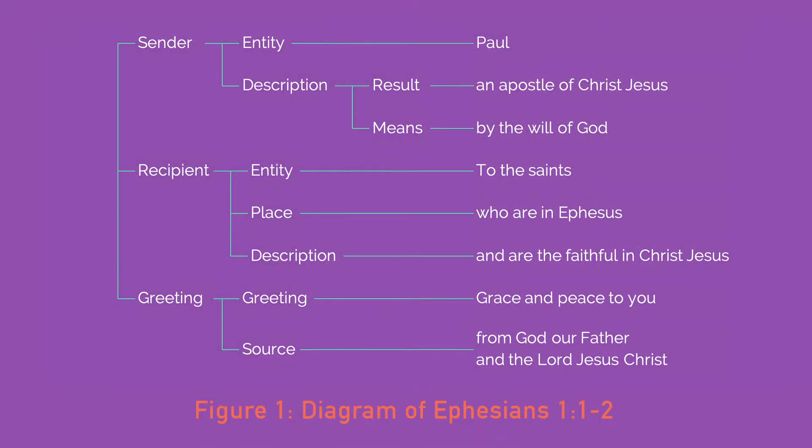Let's try to understand this specific diagram that we're looking at now. You see the text on the right-hand side, and on the far left you can see that there are three main propositions — three main ideas in this introductory greeting part of Ephesians. Firstly, we see the sender: Paul, an apostle of Christ Jesus by the will of God. The sender of the letter, the author, identifies himself as Paul.